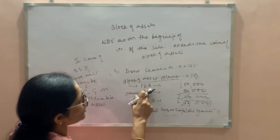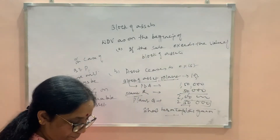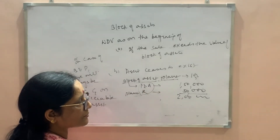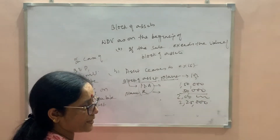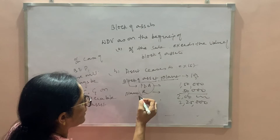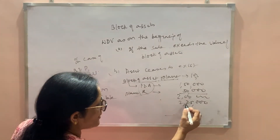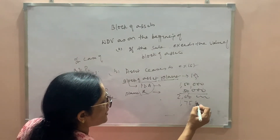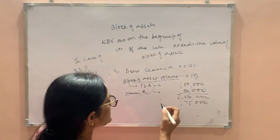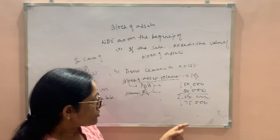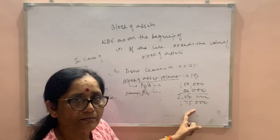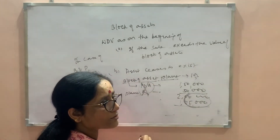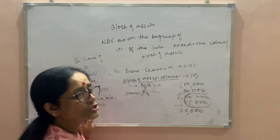Now we have the second case. We have two assets P and Q, and we purchased plant R for Rs. 50,000. Now what happens if we sold all three plants for Rs. 2,25,000? In that case there is no asset remaining in the block, so there is a capital gain of Rs. 25,000. Alternatively, if we sell all assets for Rs. 1,75,000, there is still no asset in the block but a remaining value of Rs. 25,000, resulting in a short term capital loss.